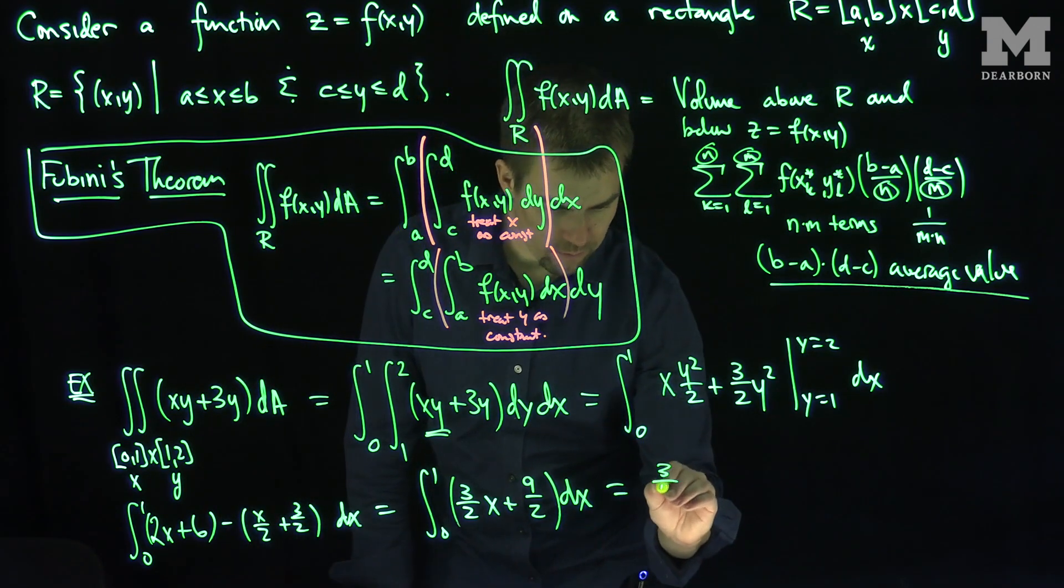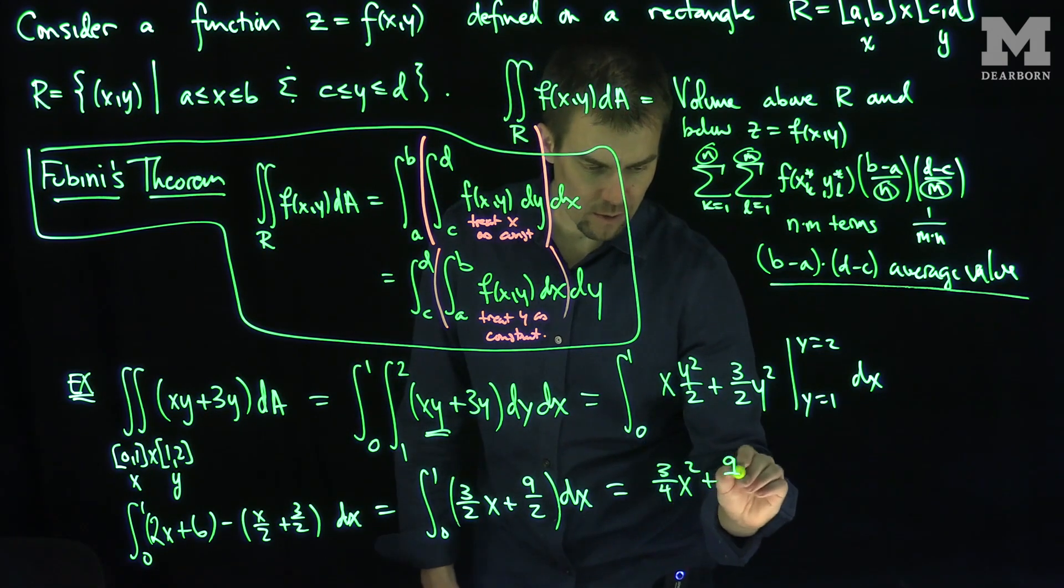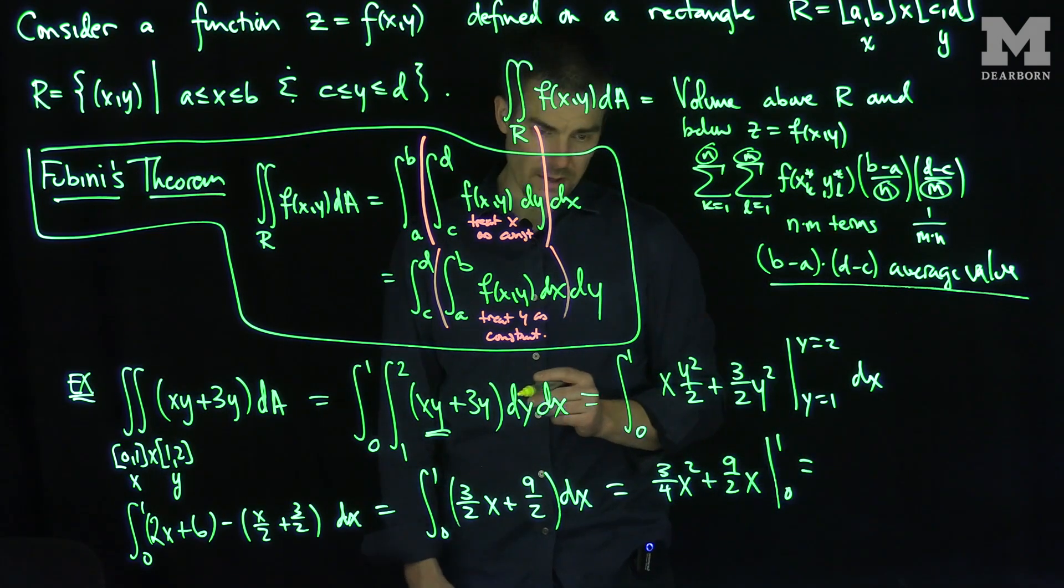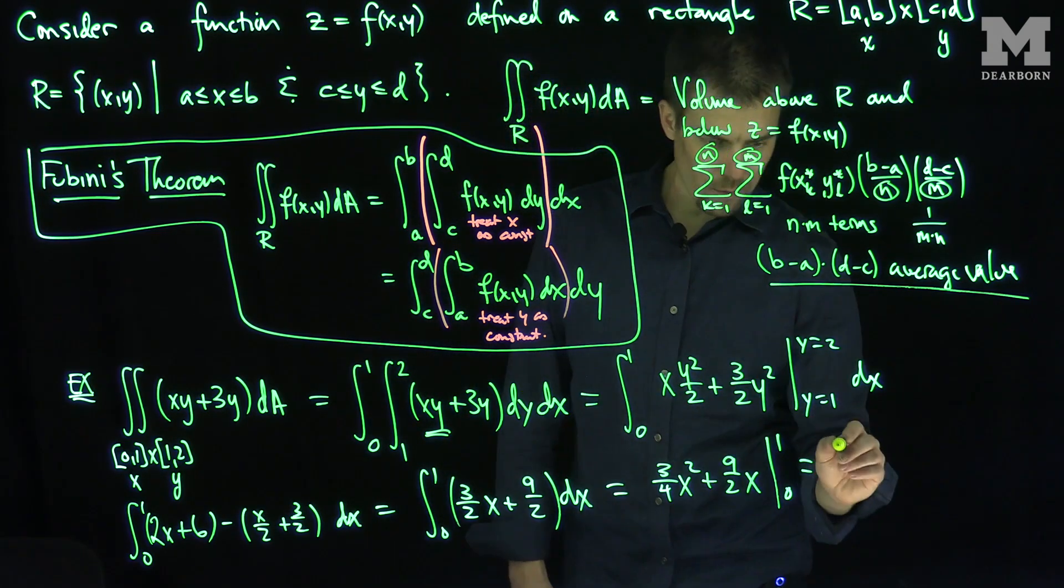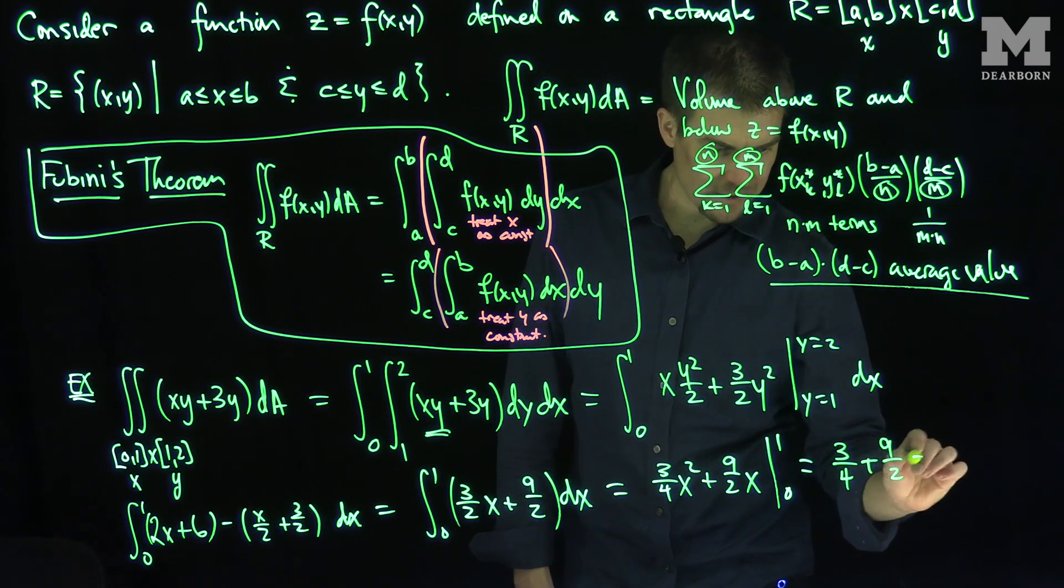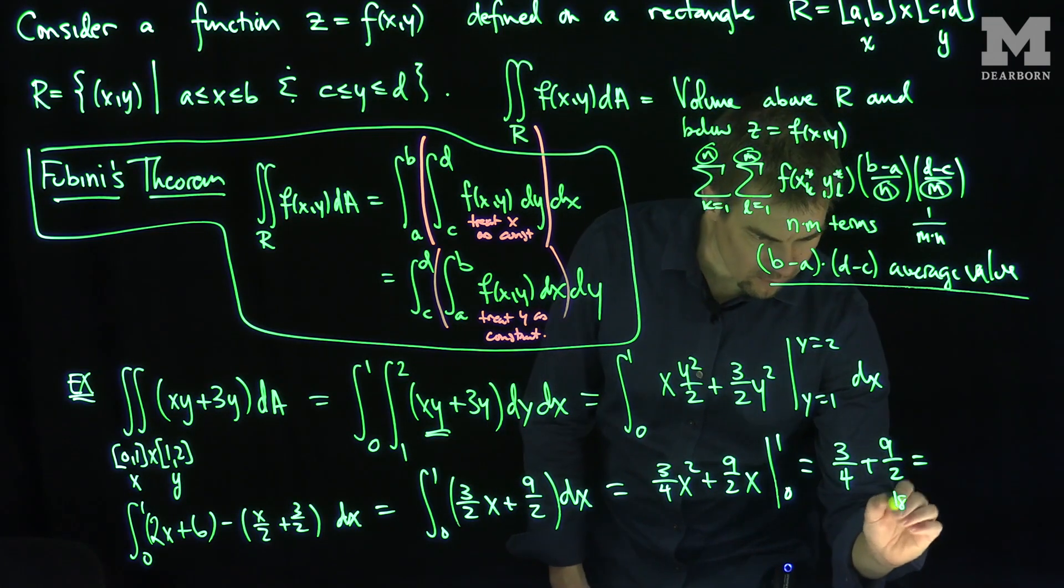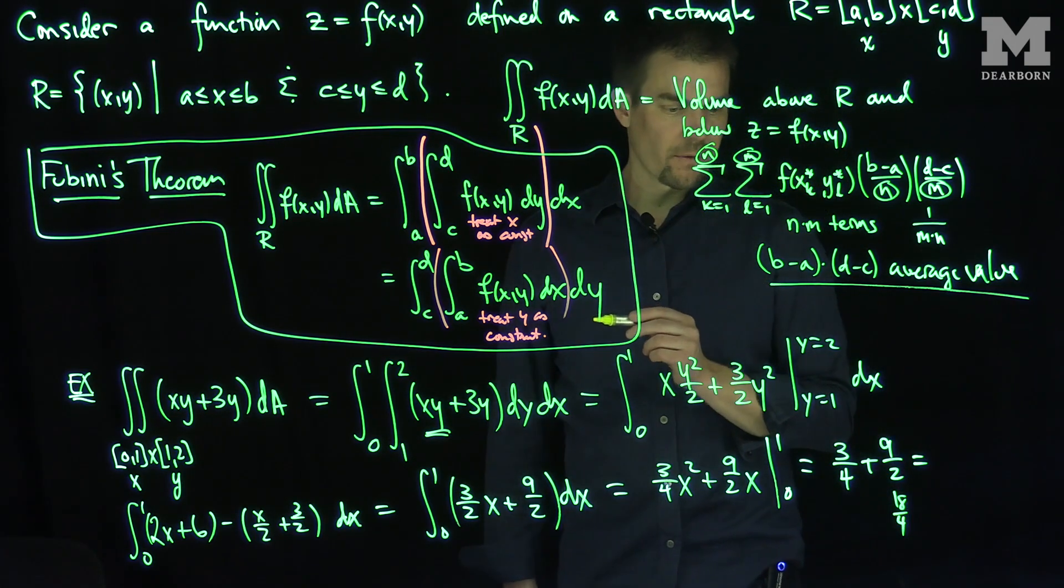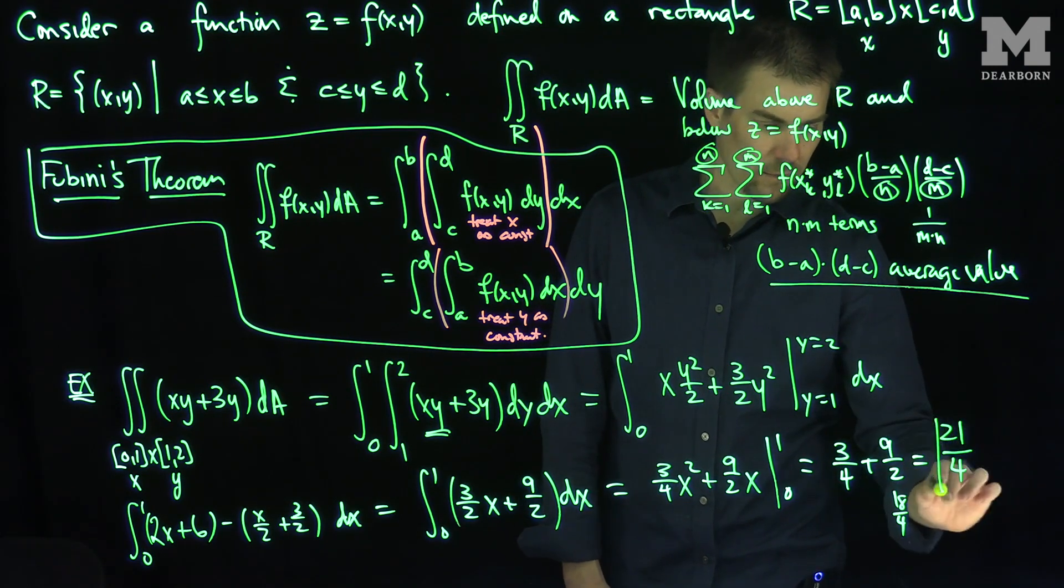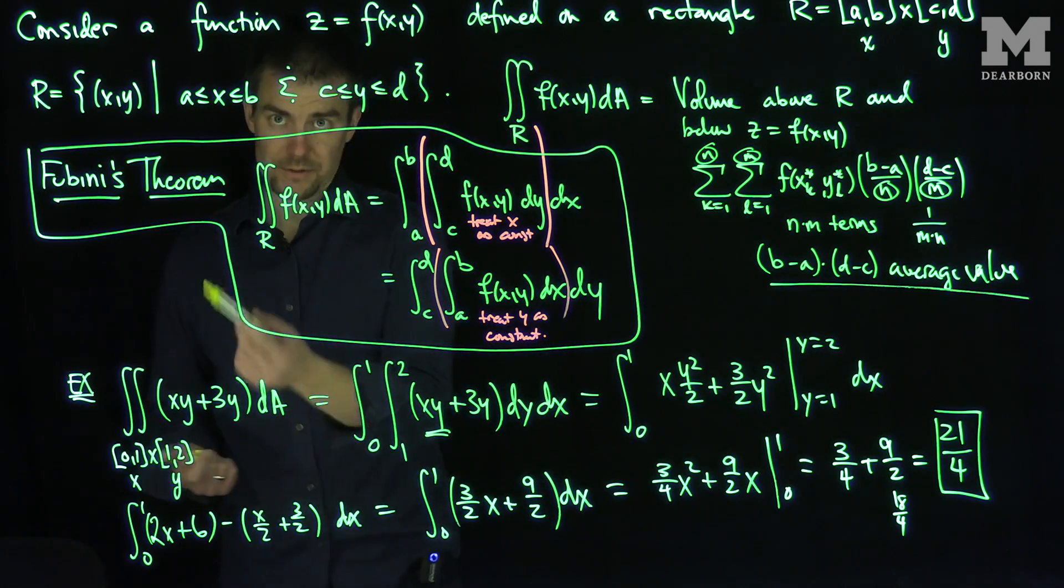And now this will integrate to what? This will integrate to 3 over 4 x squared plus 9 over 2 x from 0 to 1. The 0 limit won't give me anything, so what I'll have here is 3 quarters plus 9 halves. Now, of course, 9 halves is really 18 over 4, so I have 18 over 4 plus 3 over 4, that's 21 over 4. So 21 over 4 is the double integral over this rectangle of this function over here.